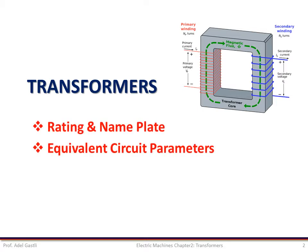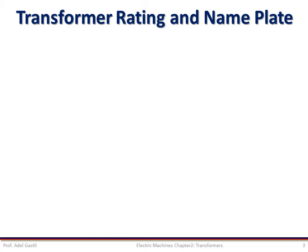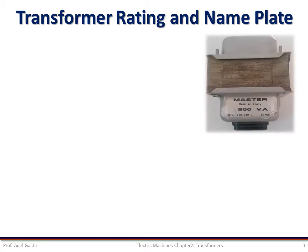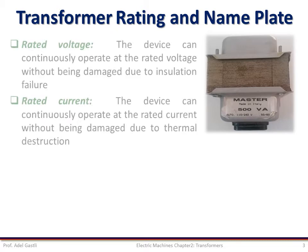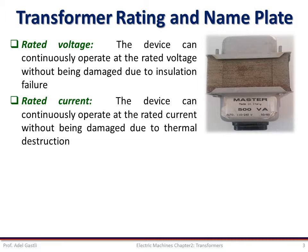Rating and nameplate and the equivalent circuit parameters. Every transformer is designed and constructed for a specific application and ratings. The ratings are usually provided and displayed on a nameplate that is fixed on the transformer casing. The ratings of a transformer are its rated voltage, which means the device can continuously operate at the rated voltage without being damaged due to insulation failure, and the rated current, which means the device can continuously operate at the rated current without being damaged due to thermal destruction.